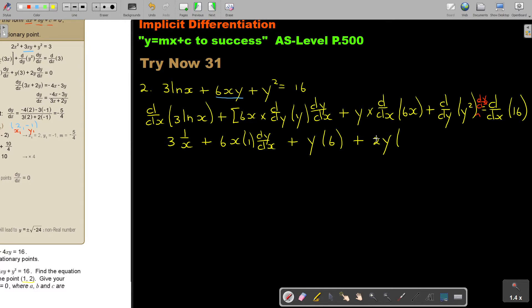So as soon as I differentiate 2y, I must remember that. It's 2y dy/dx, and that equals 0. If I simplify this: 3 over x, this is 6x dy/dx, plus 6y, plus 2y dy/dx equals 0.